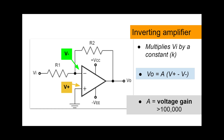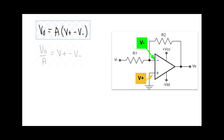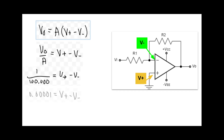Now watch closely when we rearrange this equation and plug in a typical value of VO, say 1 volt. For practical purposes, we can think of this as almost equal to 0, and so we can say that V positive is equal to V negative. We now have the first important result, which will help us understand how the circuit works. For example, we see that V positive is connected to ground, and so V positive is equal to 0. But since V positive is equal to V negative, we also say that V negative is 0. So it's as if the inverting terminal is also connected to ground, and so we can call it a virtual ground.